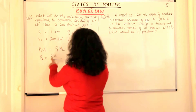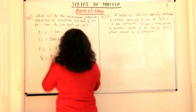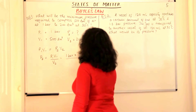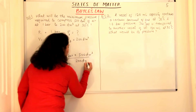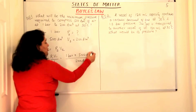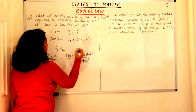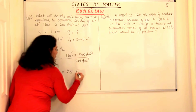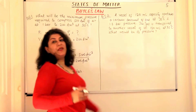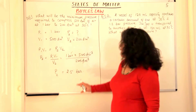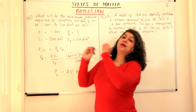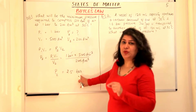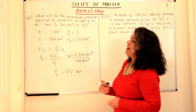Substituting the values: P1 is 1 bar, V1 is 500 decimetre cube, and V2 is 200 decimetre cube. The decimetre cube units cancel. 500 divided by 200 simplifies — 5 divided by 2 is 2.5 — and the unit you're left with is bar. So the answer is 2.5 bar. Always cancelling out units helps you make sure you've plugged in the right quantities. If you're getting the right unit, it means you plugged things in correctly.